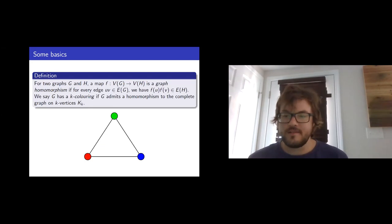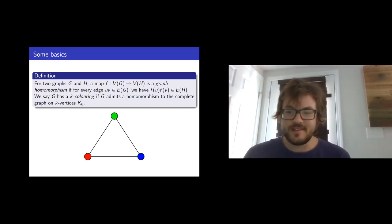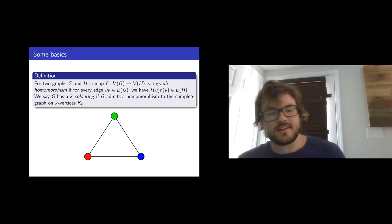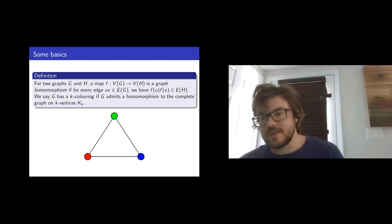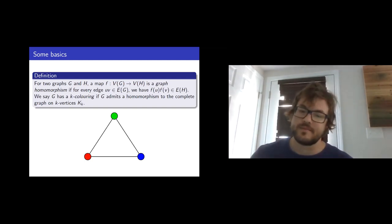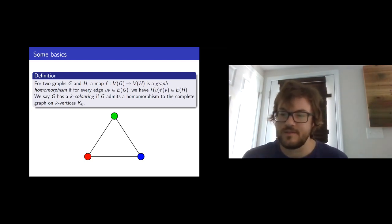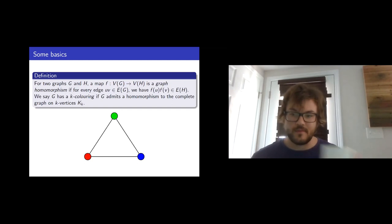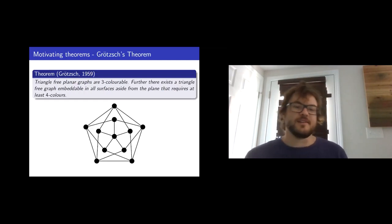The talk is about coloring. I'll define coloring via graph homomorphisms. If I give you two graphs G and H, and a map from the vertices of G to the vertices of H, such a map is a graph homomorphism if every edge of G gets mapped to an edge in H. In the particular event that H is a complete graph K on some number of vertices, we say it's a K-coloring.